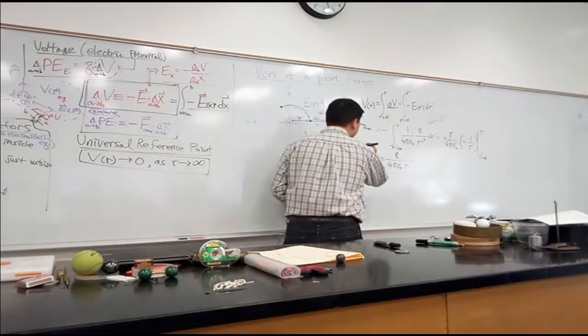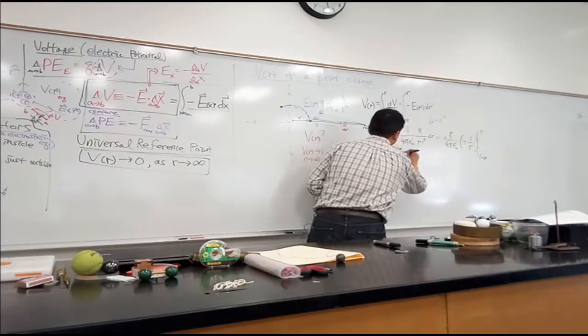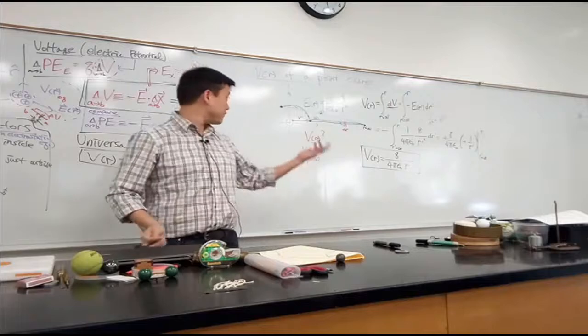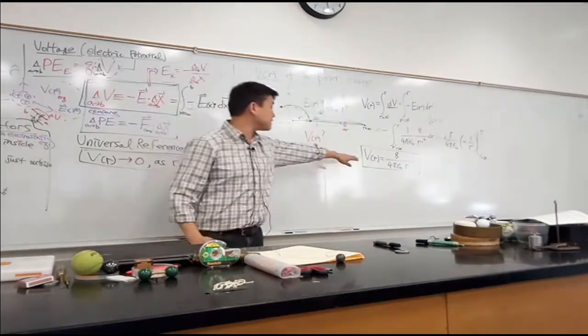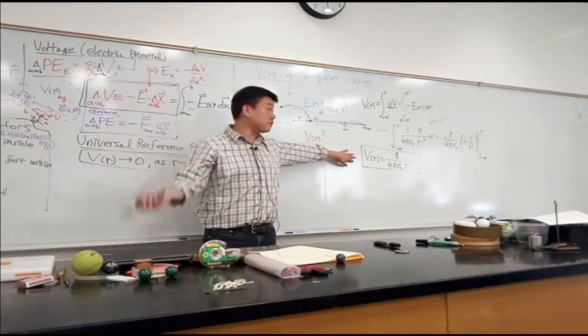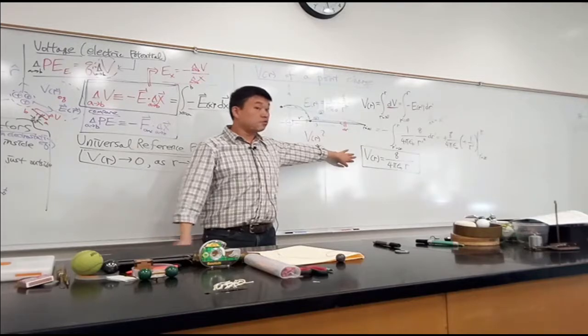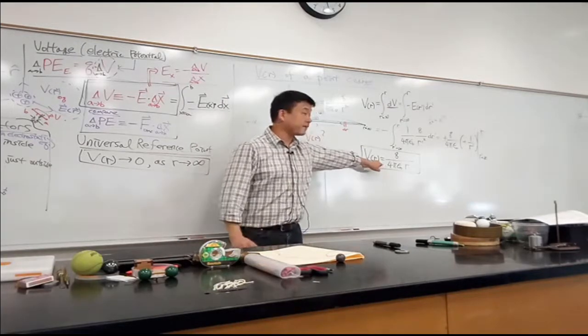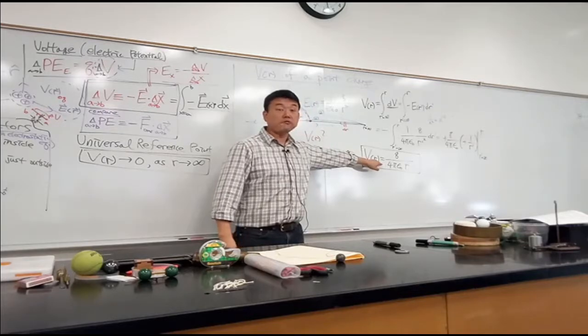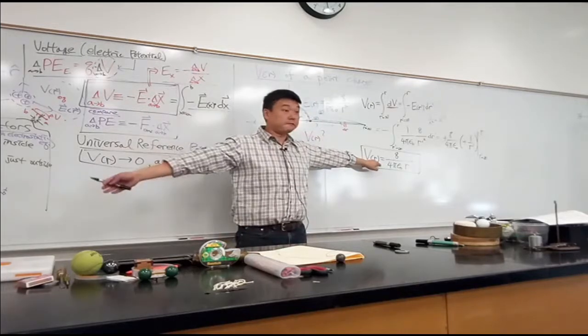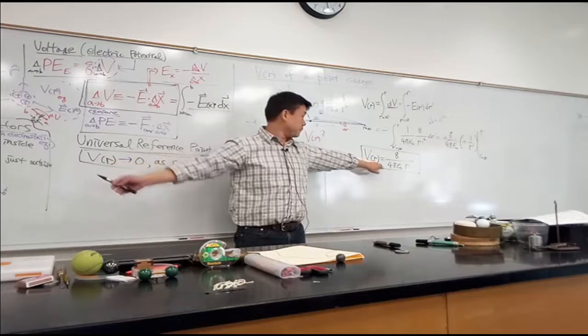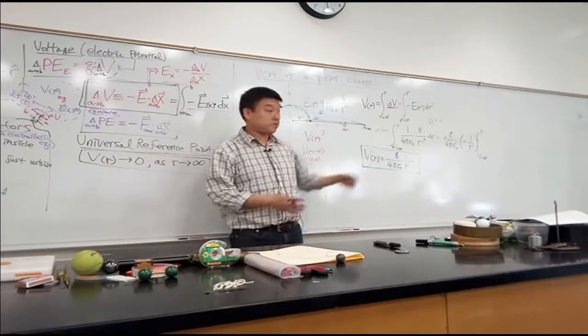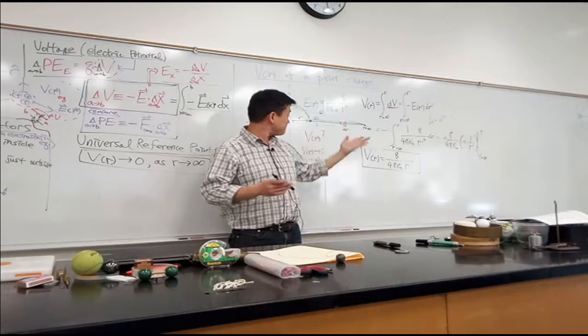It's a surprisingly simple formula. And in fact, if you've been reading the textbook when we were doing physics 4A, you have seen this similar formula in the context of gravity. So gravitational potential energy due to earth or the sun also goes like this if you set the reference potential to be at infinity. But this is for electric potential. So that's it.